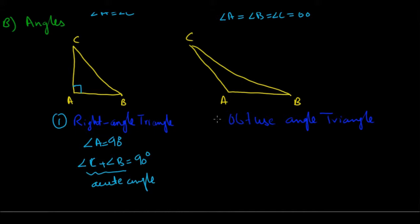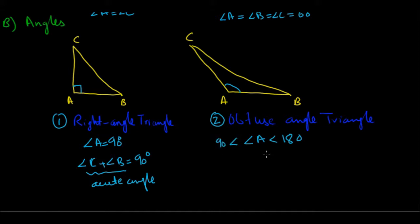The next classification based on angle is the obtuse angle triangle. You don't really need to know this classification, but we'll cover it. In an obtuse angle triangle, one of the angles is obtuse — greater than 90 but less than 180 degrees. Here, angle A is the obtuse angle.